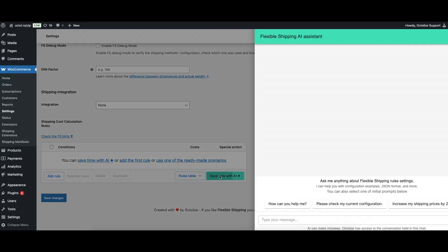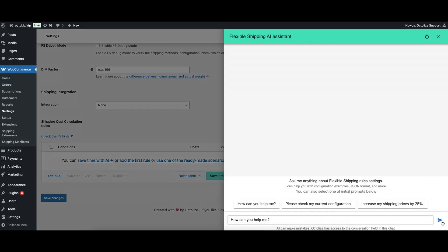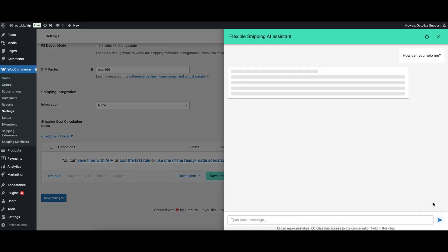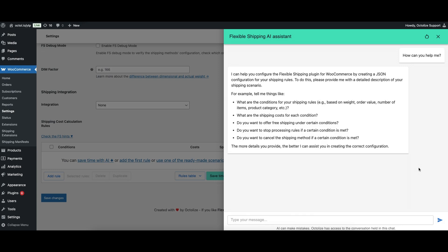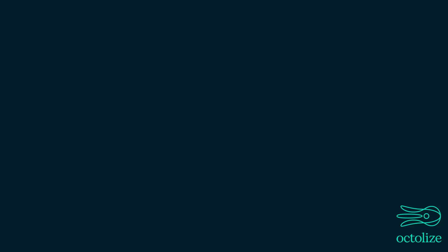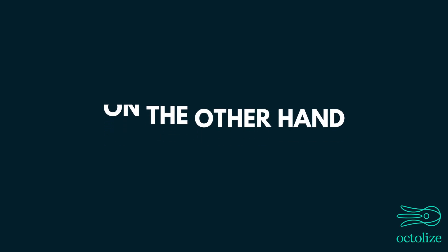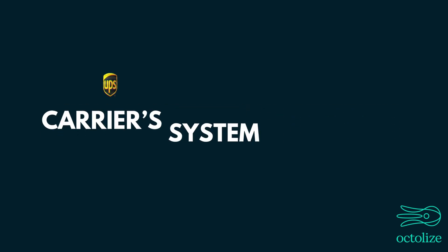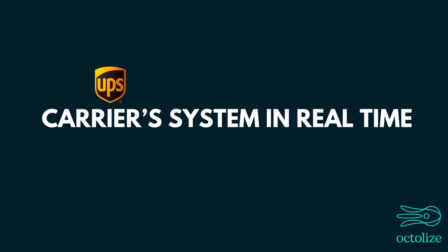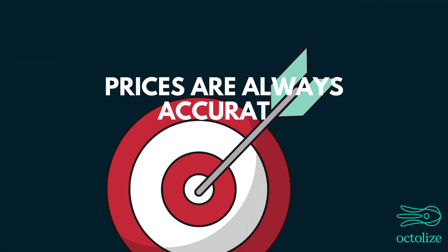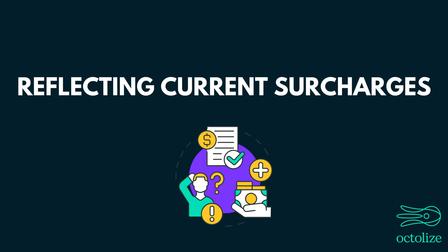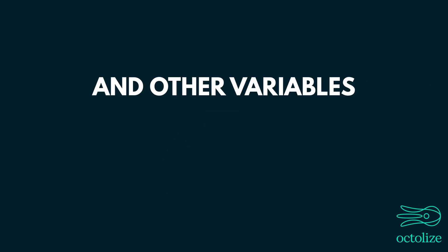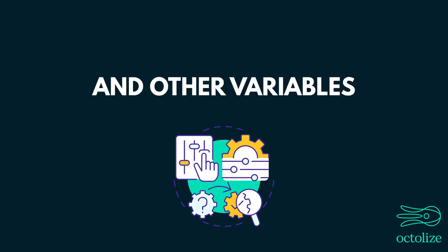Recently, we added an AI feature to our main plugin, Flexible Shipping, which makes setting up these rules even easier and faster. On the other hand, Live Rates are pulled directly from the shipping carrier system in real-time. This means prices are always accurate, reflecting current surcharges and other variables.